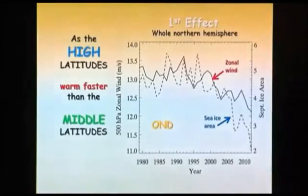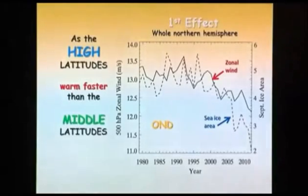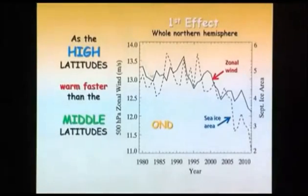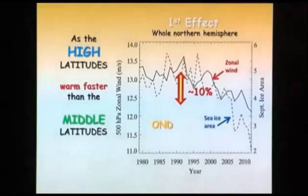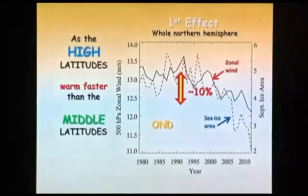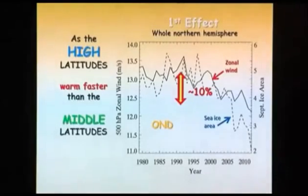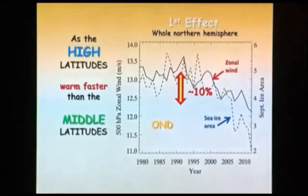If we look at the NCEP reanalysis for what the 500 millibar zonal winds have been doing over the last several decades — going back to 1980 right up to present — this black line is the actual observed zonal wind at 500 millibars, and you can see that it has very clearly been decreasing. In fact, its speeds are about 10 percent lower than they were back around 1990. We also noticed that they really started to drop off right when the sea ice really started to disappear. The dotted line here is the sea ice area at the end of summer, and right as the ice started to drop off, that's about when the zonal wind started to decrease too.